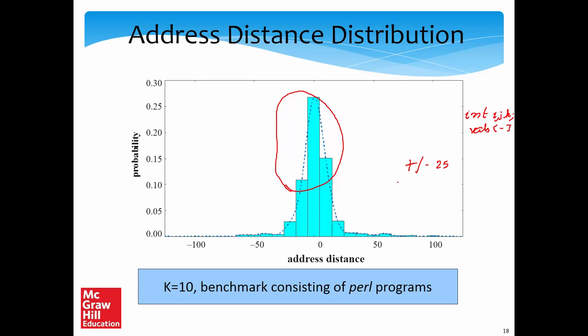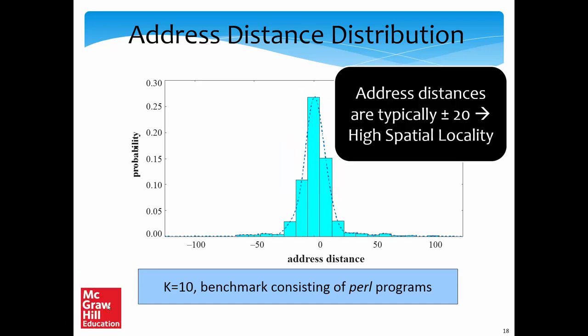More than 50-60% of accesses are within plus or minus 25 bytes address distance. This means if I access something at memory address x, very likely in the near future I'll access something at address x plus or minus delta, where delta is a small number. Address distances are typically plus or minus 20-25 bytes, indicating high spatial locality: if we access some data, we'll very likely access other data with very close addresses.